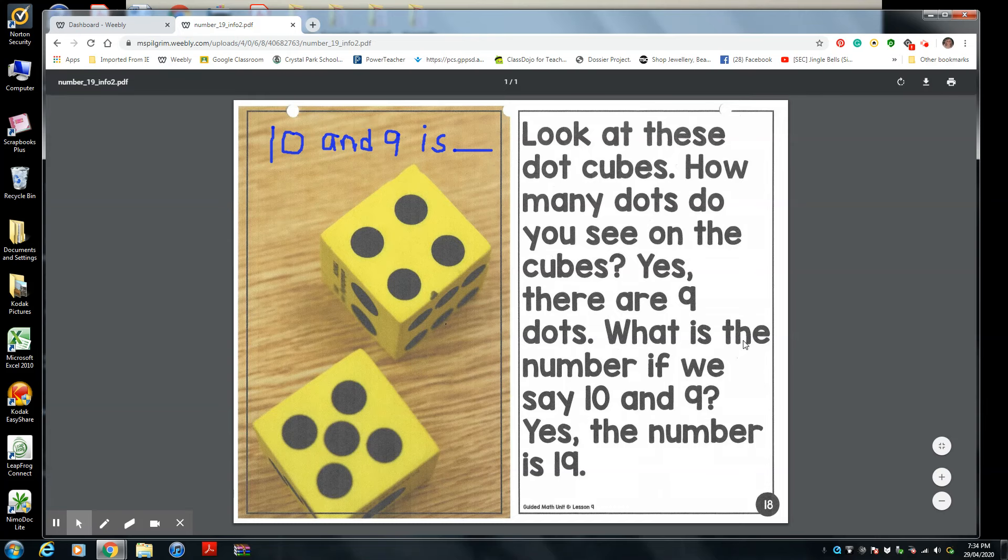Let's figure out what is the number. Going back to the passage, I'm reading it to you again. What is the number if we say ten and nine? So, look at the number up on top of the page in the blue letter, in the blue marker. Here, ten and nine is one group of ten and nine ones is, yes, the number is 19.